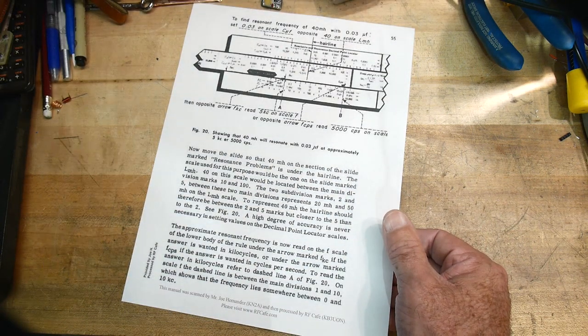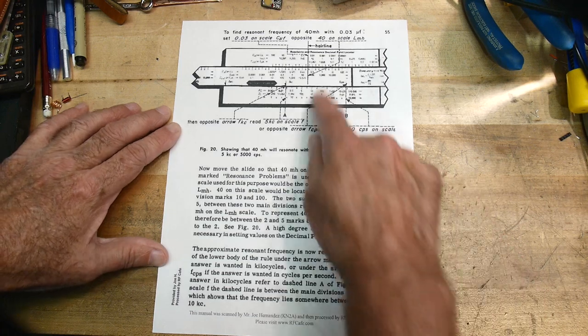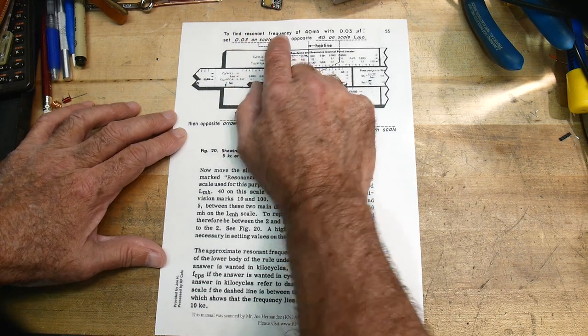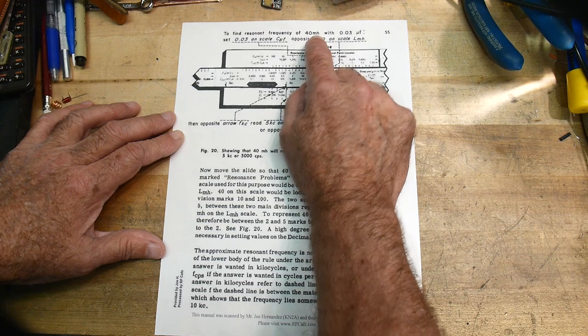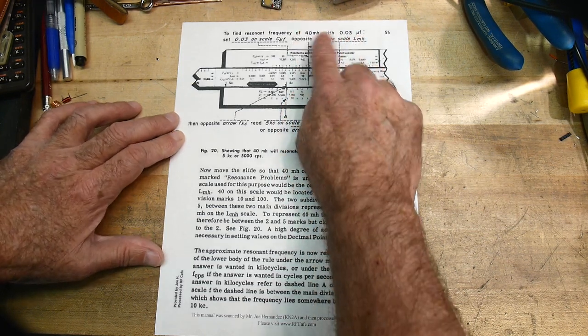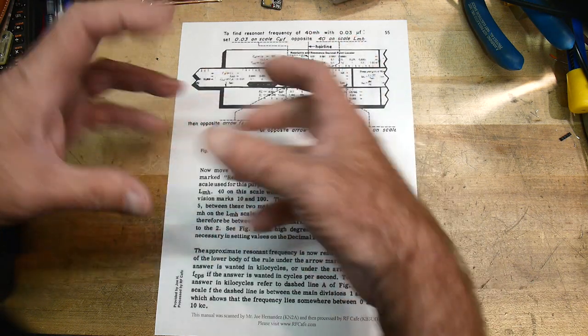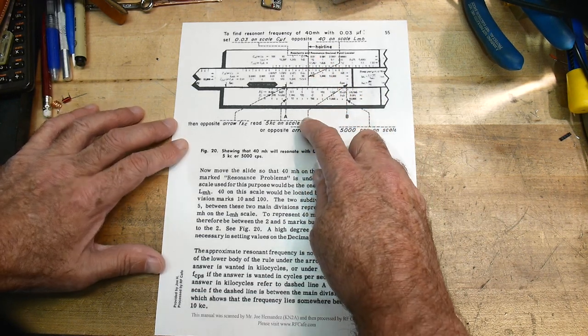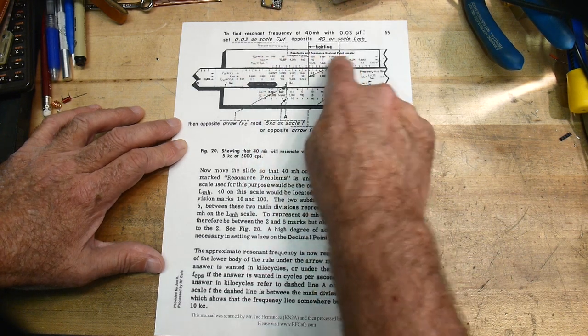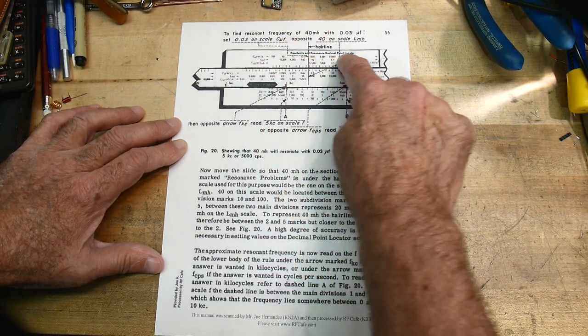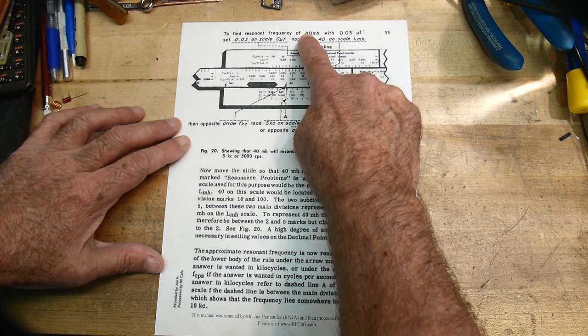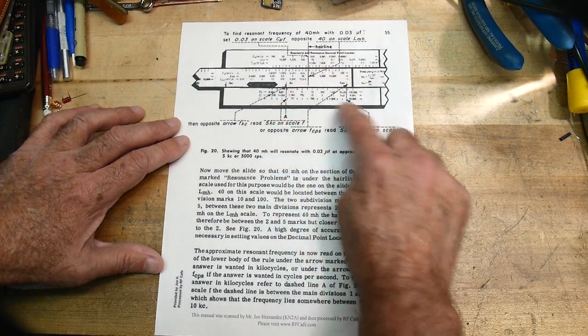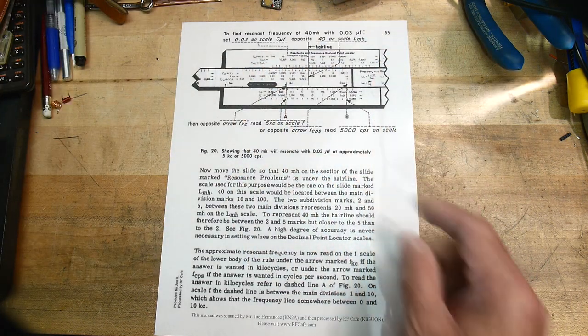So this is super cool. So let's go to one of the random pages here. This one is how to use this funny scale on the back of the slide rule. We're going to do a resonance calculation. So it says, find the resonance frequency of 40 millihenries and 0.03 microfarads. So if you had that in a circuit and it resonated, what frequency does it resonate at? So we're going to use these scales.